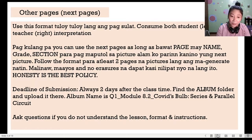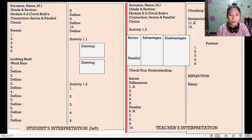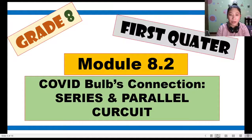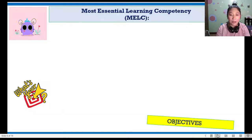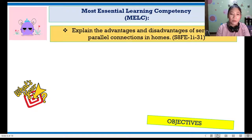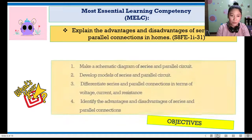This is the pattern for module 8.2 — this is how you're going to transfer it on your ISN. Now, let's proceed to module 8.2: COVID Bulbs Connection, Series and Parallel Circuit. For our MELC, we have to explain the advantages and disadvantages of series and parallel connections in homes.